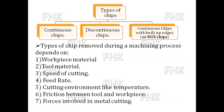These chips are formed during machining processes depending on the following factors. The first factor is the workpiece material — whether it is a ductile material or a brittle material. The second factor is the tool material. Tools are made with different grades of material, such as high speed steel or hardened steel.